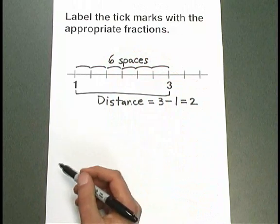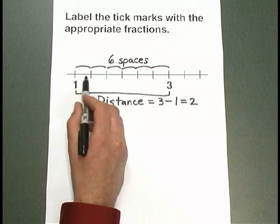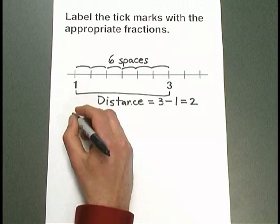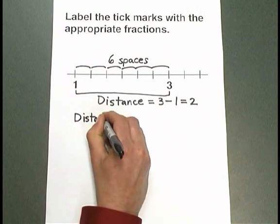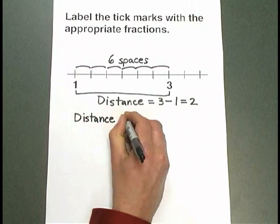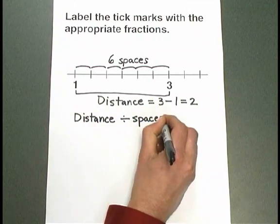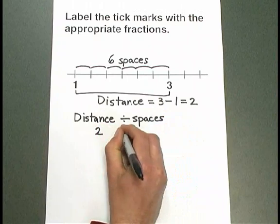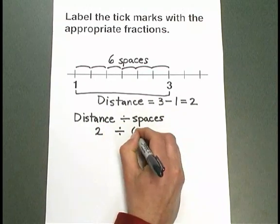Next, we want to figure out how large each space is. We want to know the size of each space. To do that, we're going to take the distance that we just figured out and divide by the number of spaces. The distance from 1 to 3 was 2. We're going to divide by the number of spaces between 1 and 3. That's 6, our 6 spaces.